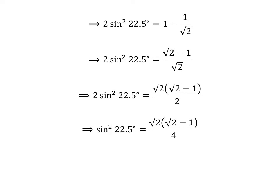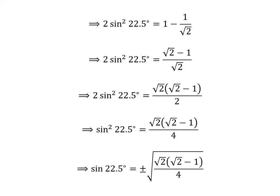Here, I have moved the factor 2 from the left hand side to the right hand side of the above equation. So the denominator becomes 2 times 2, that is 4. Taking the square root of the whole expression gives us: sine of 22.5 degrees is equal to plus or minus the square root of square root of 2 times square root of 2 minus 1 upon 4.